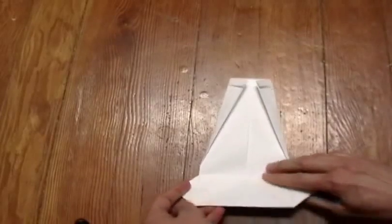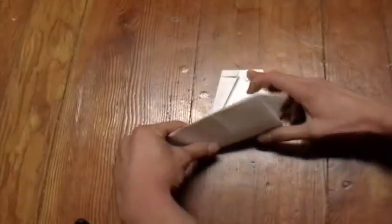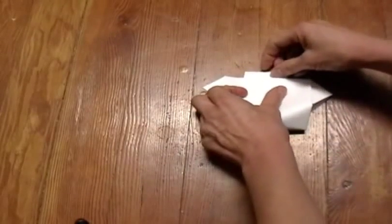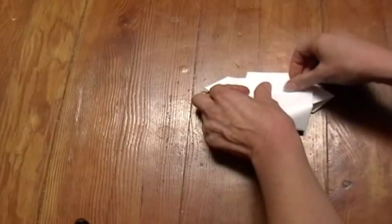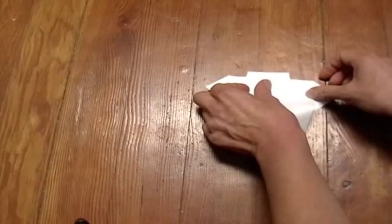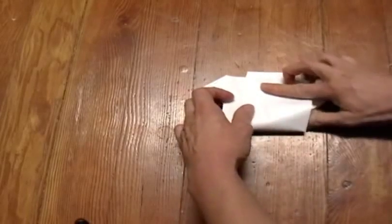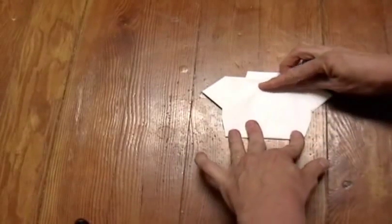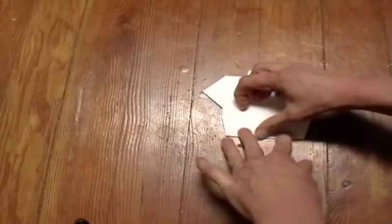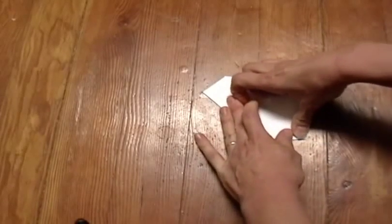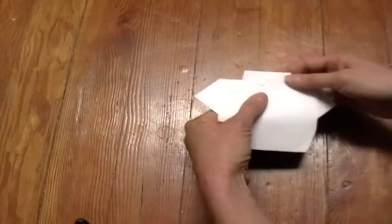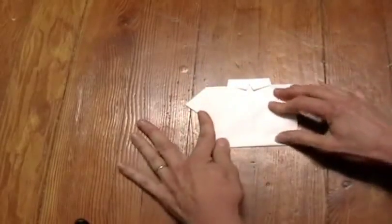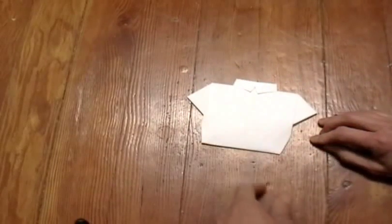Now bring up this bottom edge to that same point where our collar meets together. And make that crease. And there we have a little tapered edge there. And now just tuck that folded edge underneath the collar. And we have our missionary shirt.